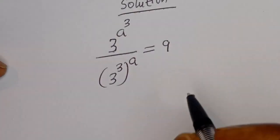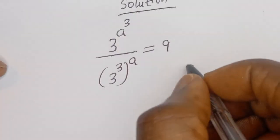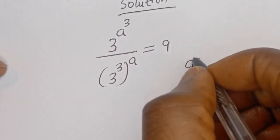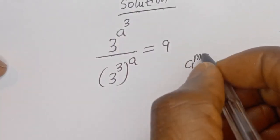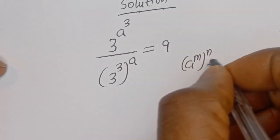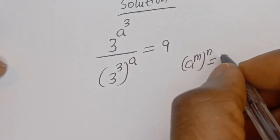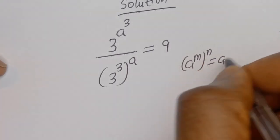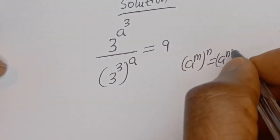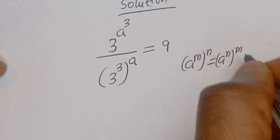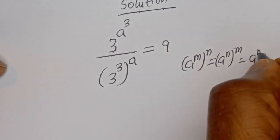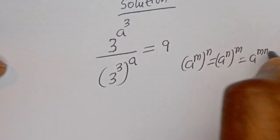Take note of this: if you have A to the power of M to the power of N, this is equal to A to the power of N to the power of M, which is equal to A to the power of M times N.